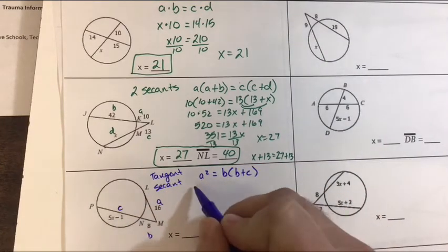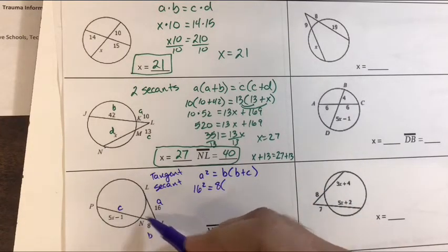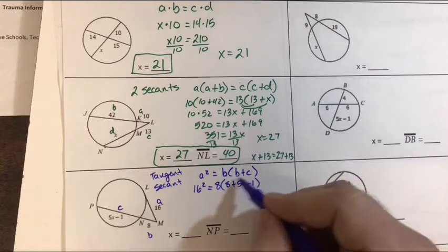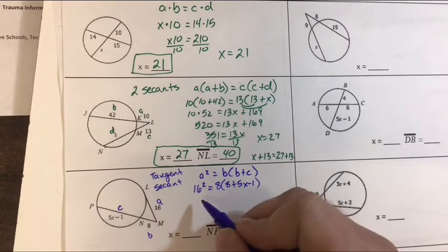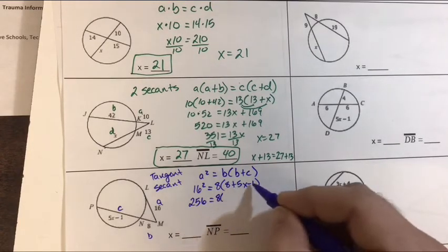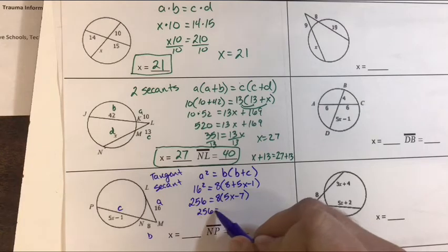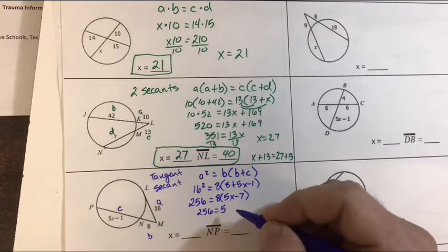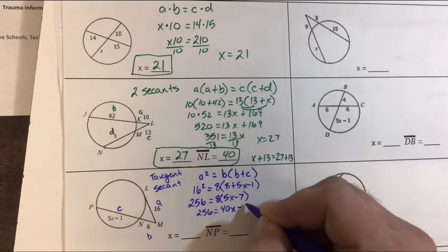So we start off with a squared or 16 squared equals the outside part 8 times the entire thing. Remember we get our entire thing by adding these pieces together, 8 plus 5X minus 1. So there's just some combining like terms to do here. 16 squared is 256, and then I'm going to combine some like terms before I distribute. 8 minus 1 is 7, so that's 5X plus 7. 256 equals, sorry 8 times 5 is 40, not 45. 40X minus 8 times 7 is 56.